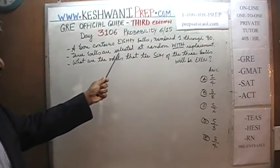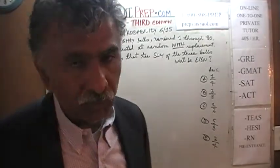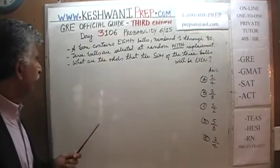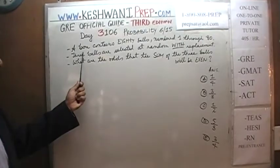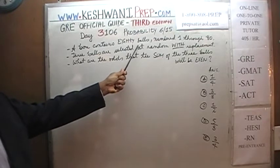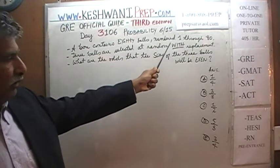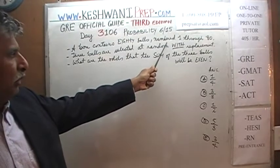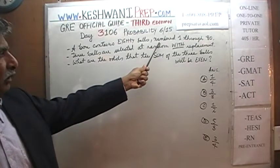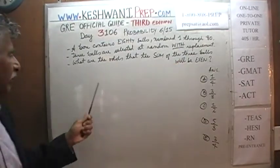We're going to do one problem today. This problem that you see on the blackboard is not in the book, so don't try to look for it. Let's read it together. A box contains 80 bowls, each one numbered 1 through 80.